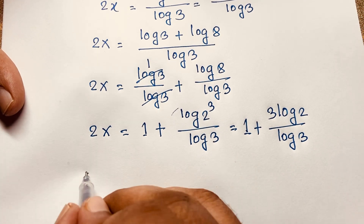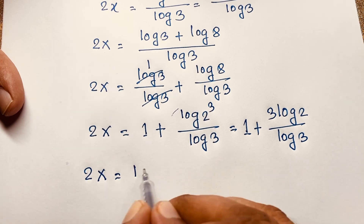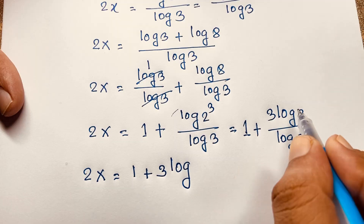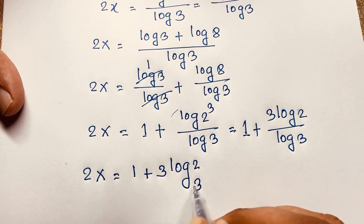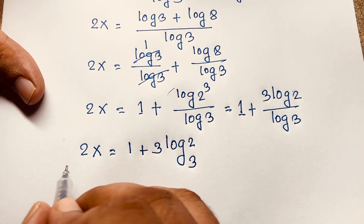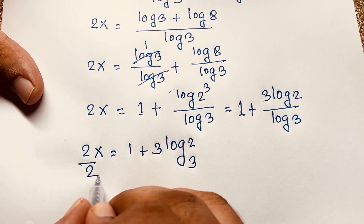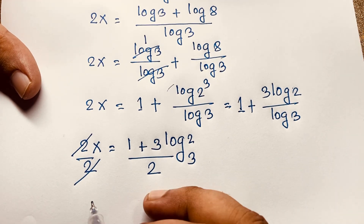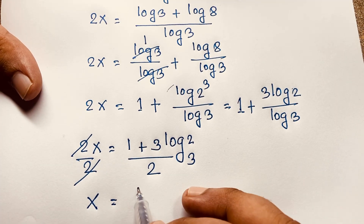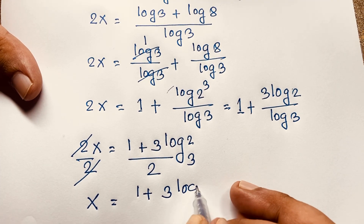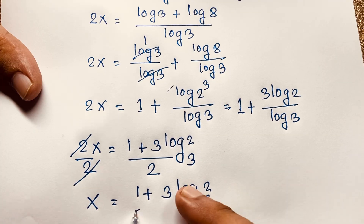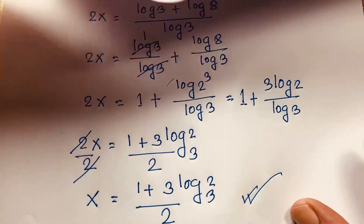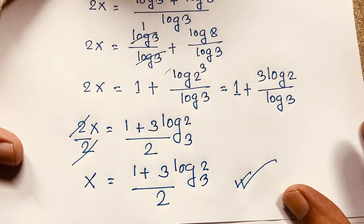Now here, the 3 moves to the front, giving 3·log 2 over log 3. So you can say 2x equals 1 plus 3·log₃2, where log₃2 means log 2 base 3. Now at this point I divide both sides by 2 — these 2s cancel out. So x equals (1 plus 3·log₃2) divided by 2. This is our final answer in this exponential math problem.